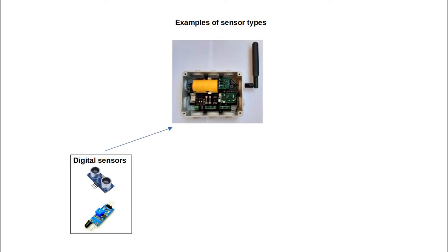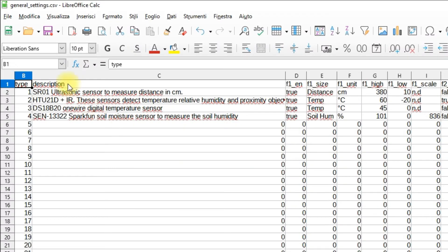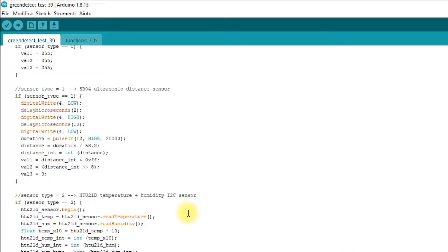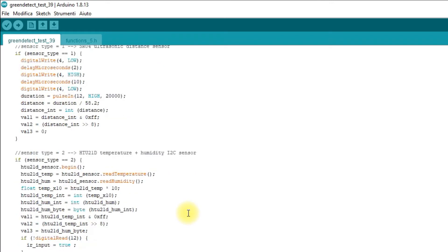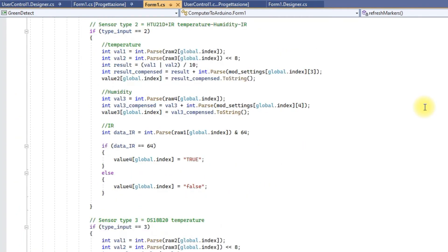The module can accept digital, 10-bit analog, 1-wire and I2C sensors. Two or more sensors can be combined and connected to the same module. The limit is represented by the fact that we can transmit a maximum of 3 bytes.